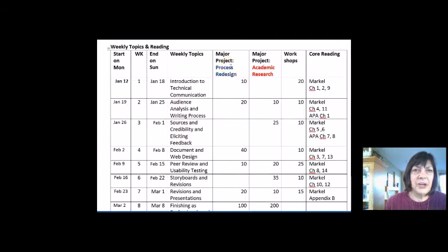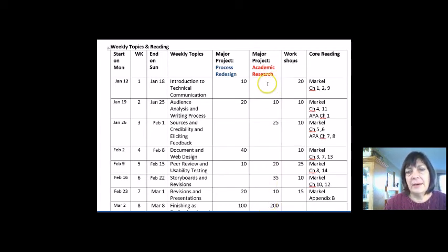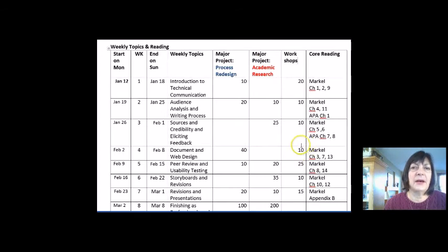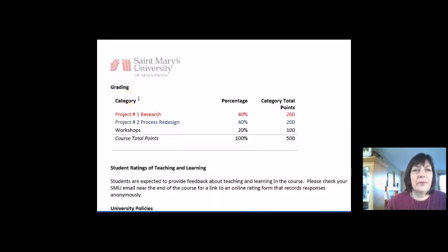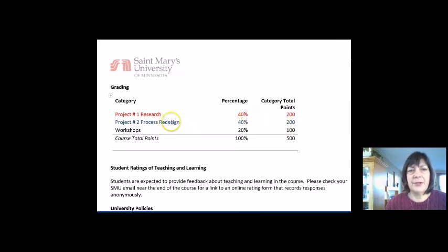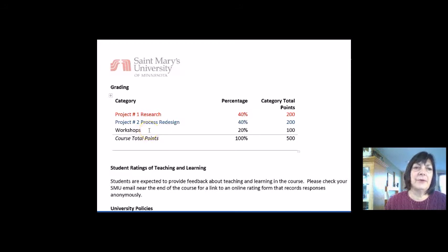So that's it. There's one major project called process redesign that's all about business writing. There's a separate major project called academic research which also lasts throughout the course and uses APA style, double spacing, and academic writing. And finally, the third part is a series of workshops which are designed to support your learning about the other two major projects. For grading: 40% of your course is the academic research project, 40% — 200 points out of 500 — is the process redesign or business technical writing, and 20% are the workshops, which are the least important from a grading and timing perspective.